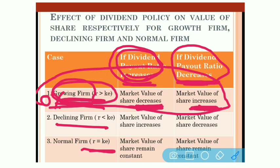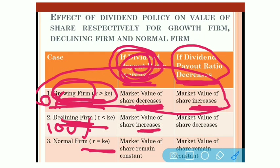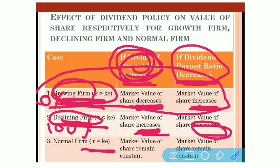For a declining firm where R is less than K, the firm's rate of return on investment is lesser than the cost of capital. The optimum payout ratio for a declining firm is 100%. If the dividend payout ratio increases, the market value of the share increases. If the payout ratio decreases, the market value of the share decreases. So for a declining firm, the entire earnings should be paid to shareholders.